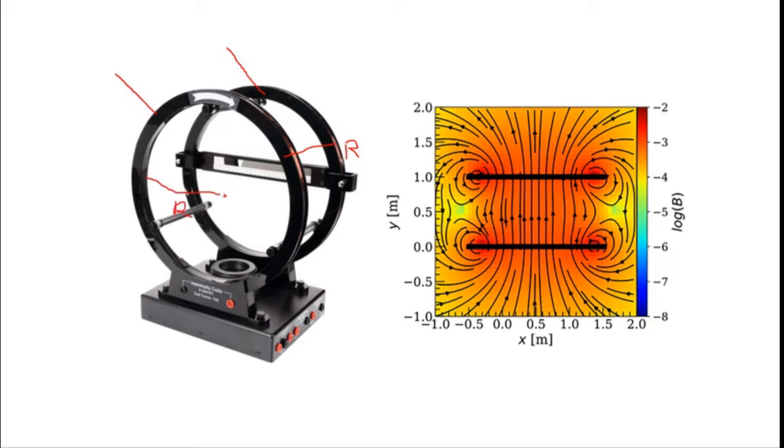The purpose of inventing the Helmholtz coil is to generate an approximately uniform magnetic field, and it can be used in various applications.